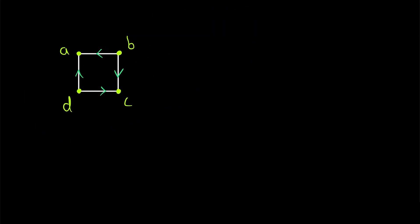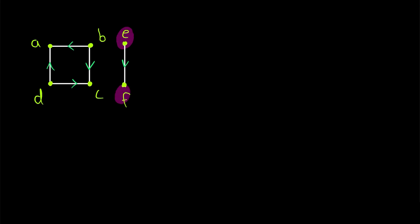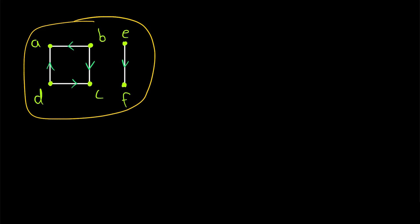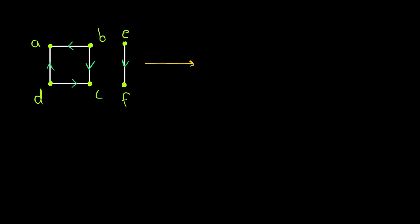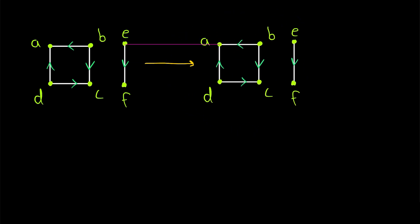Now let's quickly look at an example of a directed graph that is not weakly connected. So here's another directed graph, just like the one we were looking at before, except with two more vertices and one additional directed edge. So is this directed graph weakly connected? Well, for a directed graph to be weakly connected, its underlying graph has to be connected. So let's quickly take a look at the underlying graph.